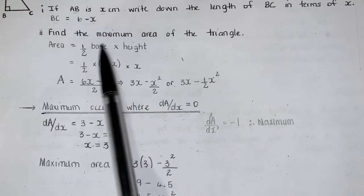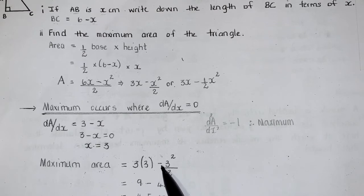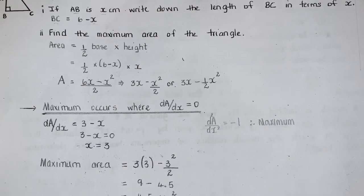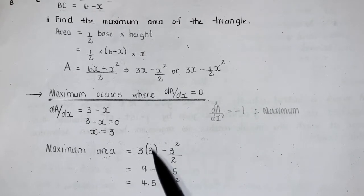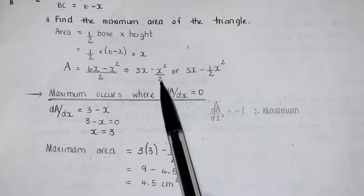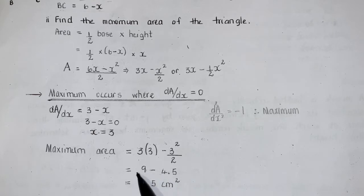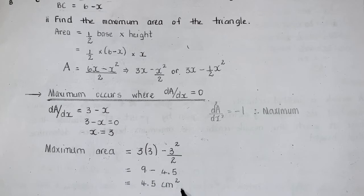We can find the area by plugging 3 in place of X in our area function. We'll end up with 3 times 3, which is 9, minus 3 squared over 2, or 9 over 2, which is 4.5. So 9 minus 4.5 makes our maximum area 4.5 centimeters squared.